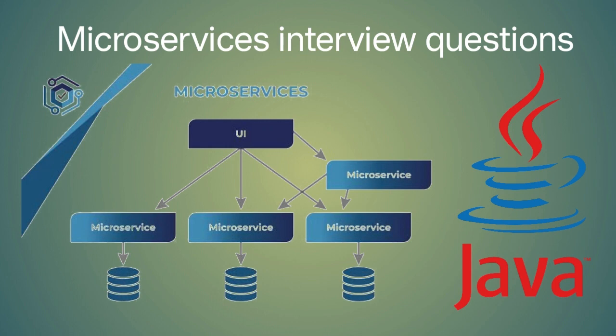How do you handle versioning and backwards compatibility of microservices APIs? To handle versioning and backwards compatibility, you can use techniques like semantic versioning and API versioning. You can also use API gateways to manage different versions of APIs.